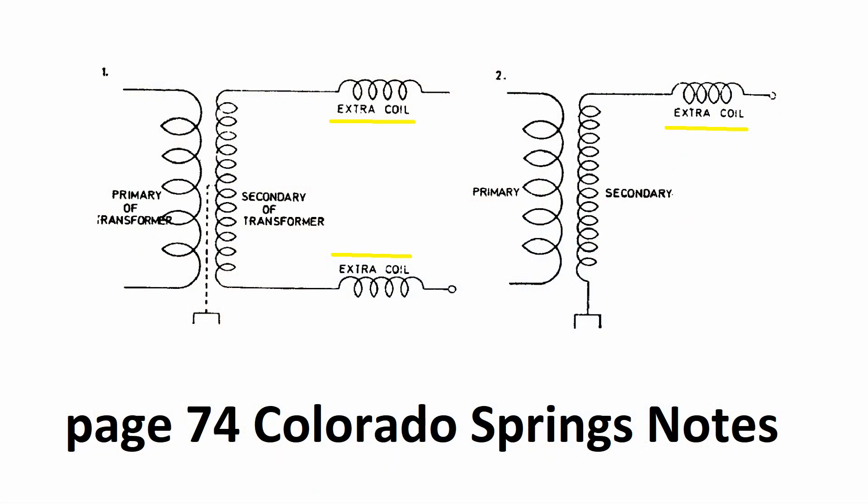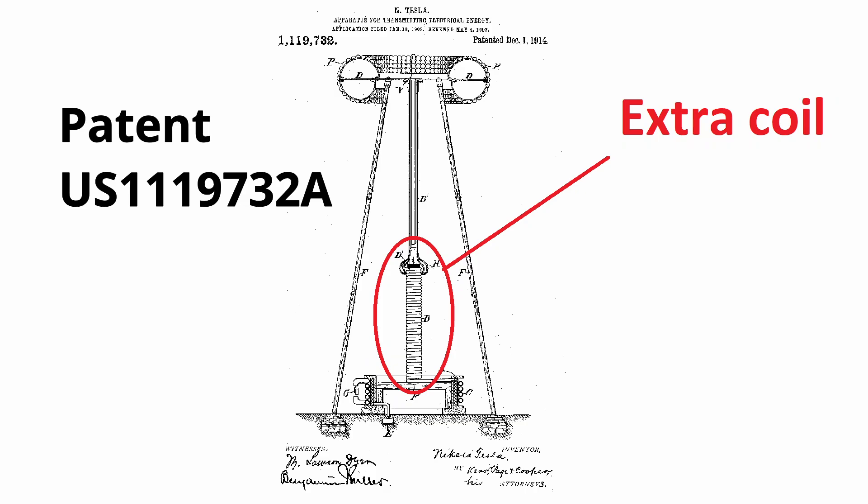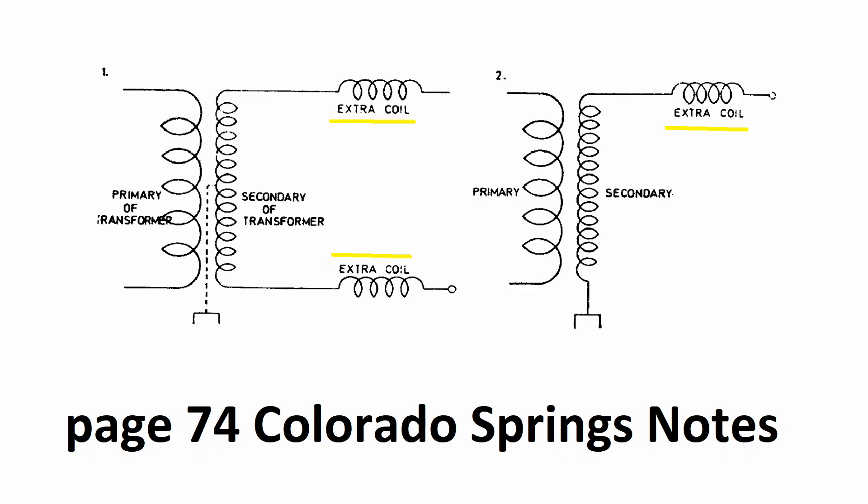Tesla's extra coil appeared in his Colorado Springs notes and in the Wardenclyffe magnifying transmitter coil patterns. Simply put, the extra coil is placed in series connection with the secondary coil. In my case, L3 is the secondary coil — it's parallel resonant — and the L4 coil is the extra coil connected in series. I just tried that and was amazed by the result: the voltage and current of this extra coil are in phase. And not only that — they are able to produce real power, because if I put a parallel resistor over L4, it heats up, which is quite extraordinary.